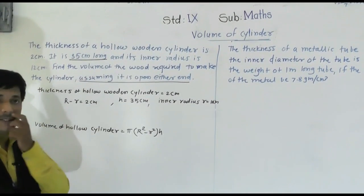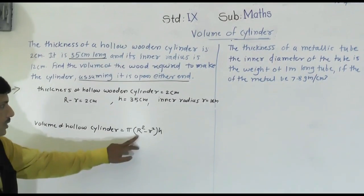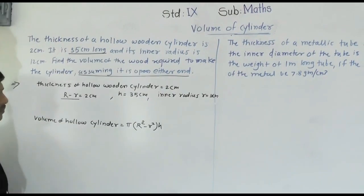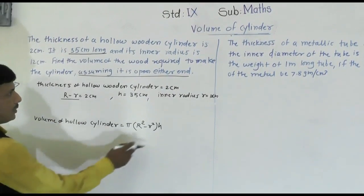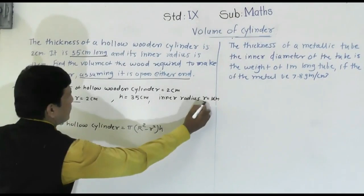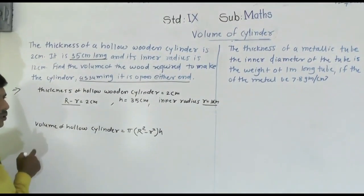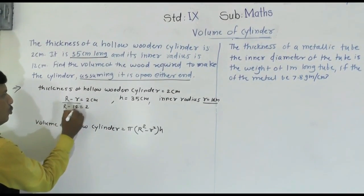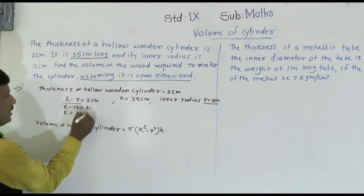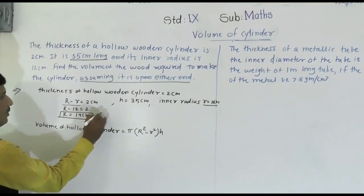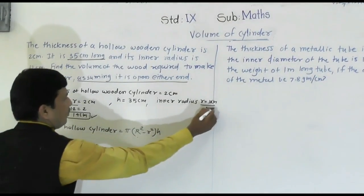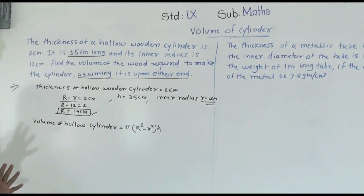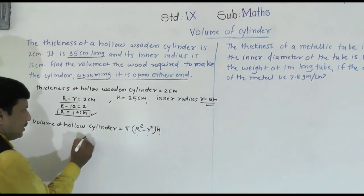We need to find the external radius R. The thickness is given: R minus r equals 2 centimeters. The inner radius is given as 12 centimeters, so R minus 12 equals 2, which gives R equals 14 centimeters. Now we have capital R, small r, and height — we can put all values into the formula.